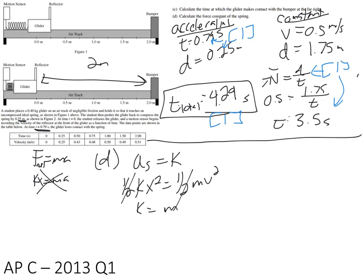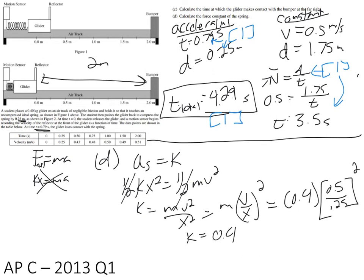We know how much it was compressed, so one half kx squared equals one half mv squared, the halves drop out. K equals mv squared over x squared, I'm actually going to just rewrite this as mv over x squared. So the mass is 0.4, speed is 0.5, and the compression is 0.25. 0.4 times 2 squared is 4, so this ends up being 1.6 newtons per meter.